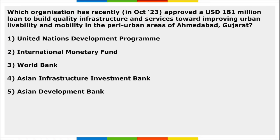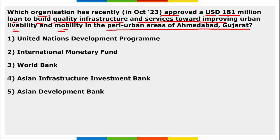Next, which organization recently approved a $181 million loan to build quality infrastructure and services towards improving urban livability and mobility in the peri-urban areas of Ahmedabad, Gujarat? It is the Asian Development Bank. The loan approved is $181 million.